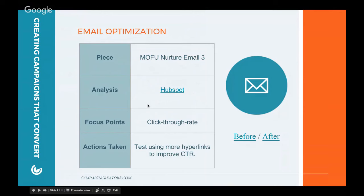Sean asked: what happens if you have multiple focus points, multiple KPIs you're trying to optimize for? How do you know what to do — do you do them simultaneously? In these situations, isolation is so important to not muddle data. It's really difficult to attribute the success of one particular optimization tactic, for example testing more hyperlinks, to a single metric when you're using multiple different elements. So it's important to isolate everything and not muddle that data.